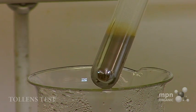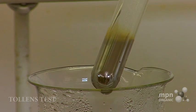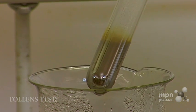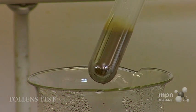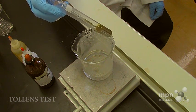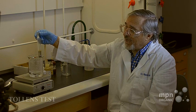What you get, then, is the interaction of the two, and you get the reduction of the silver plus one ion. And this, in fact, gives rise to the silver mirror, hence the silver mirror test or the Tollens test.